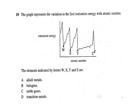Moving on — pause and have a go. W, X, Y, and Z all represent troughs — low points or points of minimum. They represent elements where it's easiest to remove an electron, and that right away should signify group 1. So did you get A — alkali metals? And that concludes our look at all the short response questions that came up in this topic. Thank you for listening.